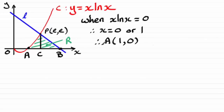Now I'm in a position to work out this area, by integrating x·ln(x) between A and C — that is between x = 1 and x = e, since the C coordinate has the same x-coordinate as P. We'll do that integral shortly. First I want to establish the equation of the line L.